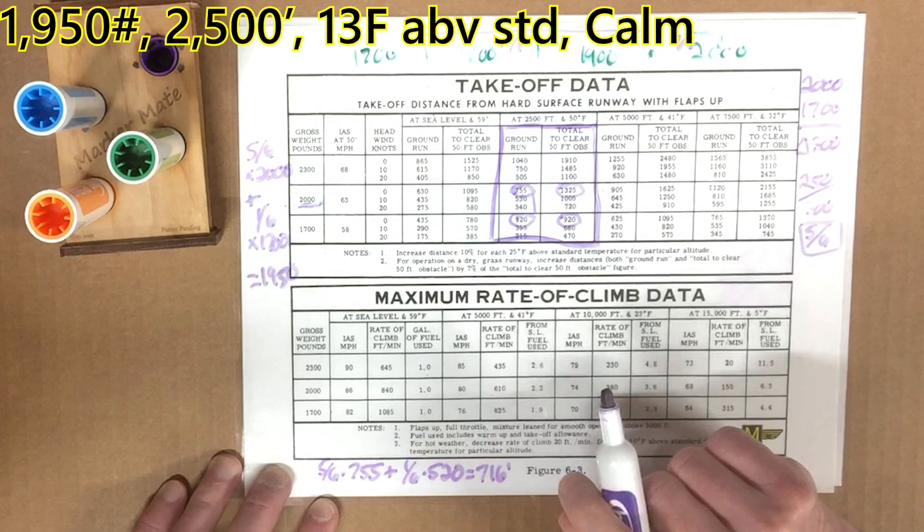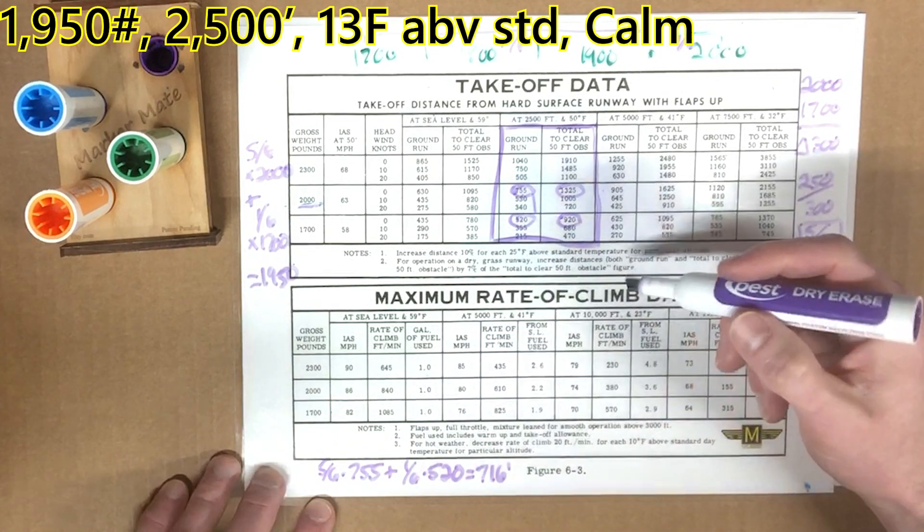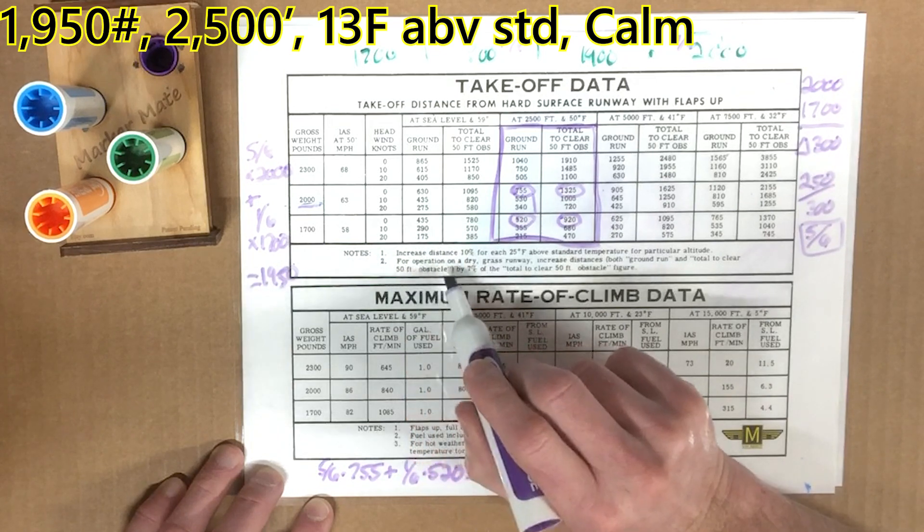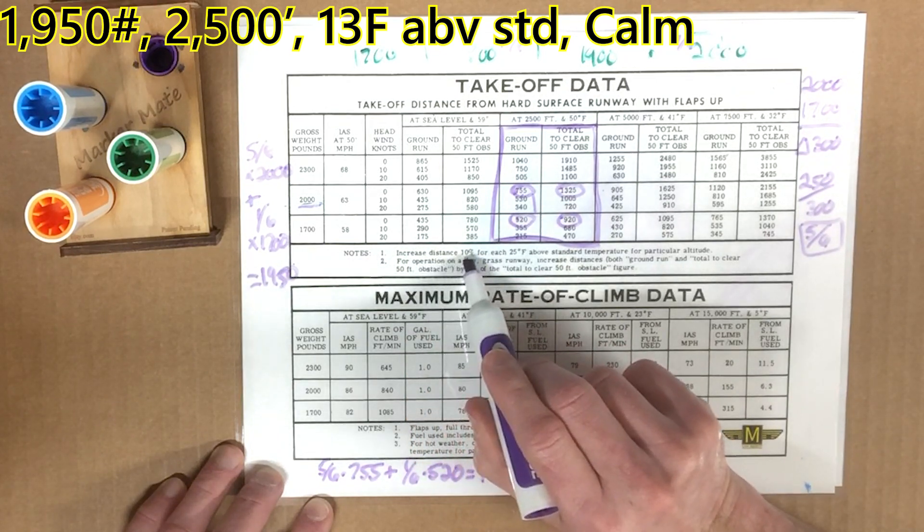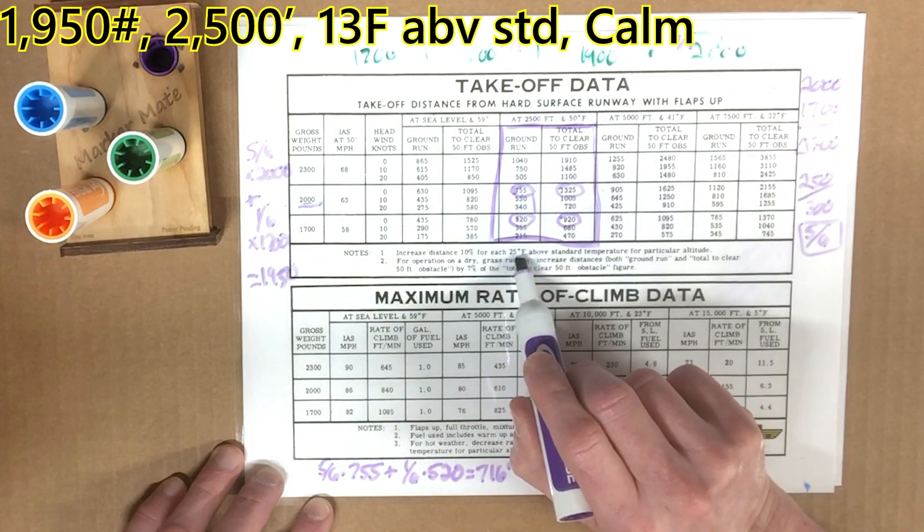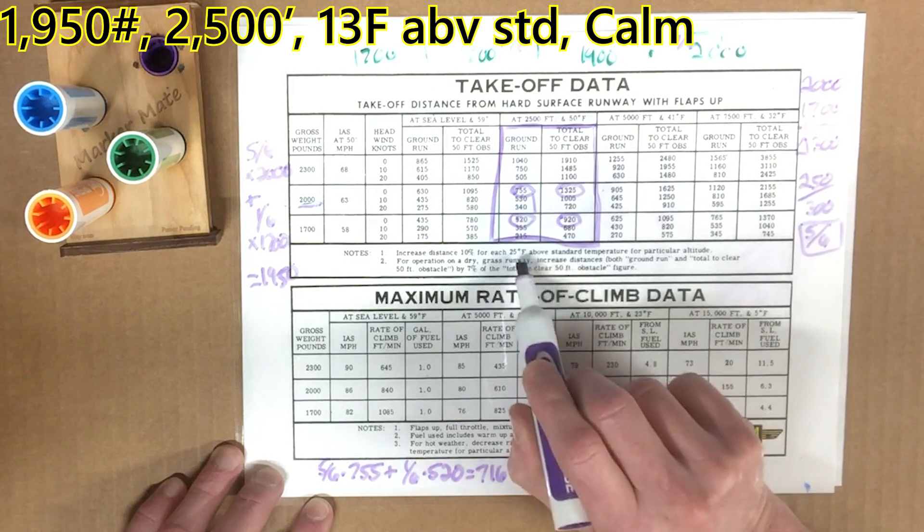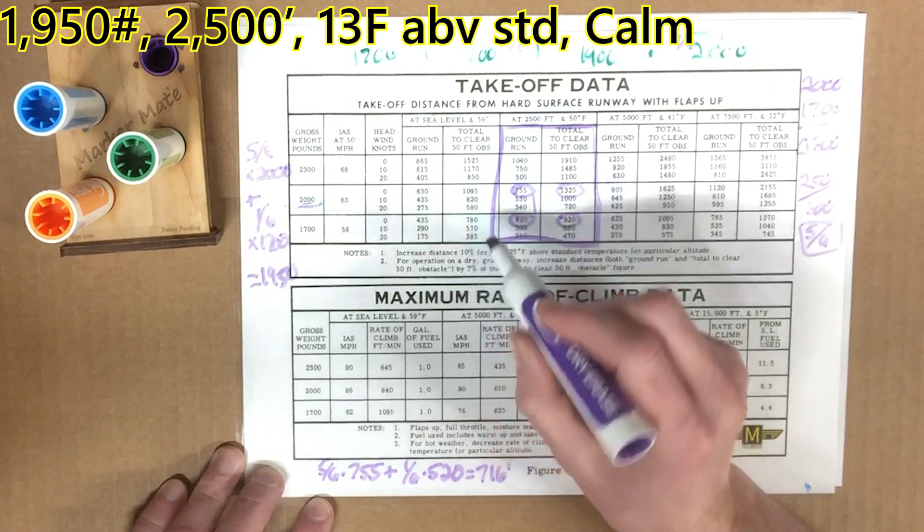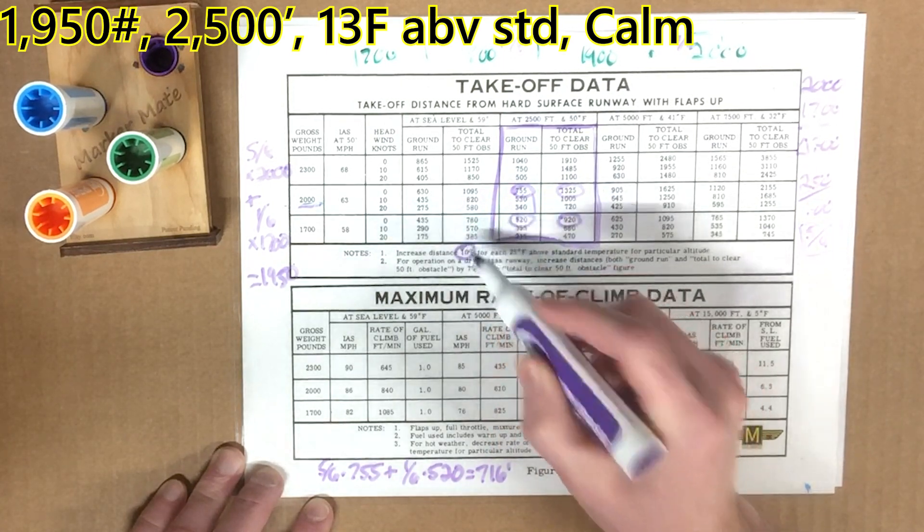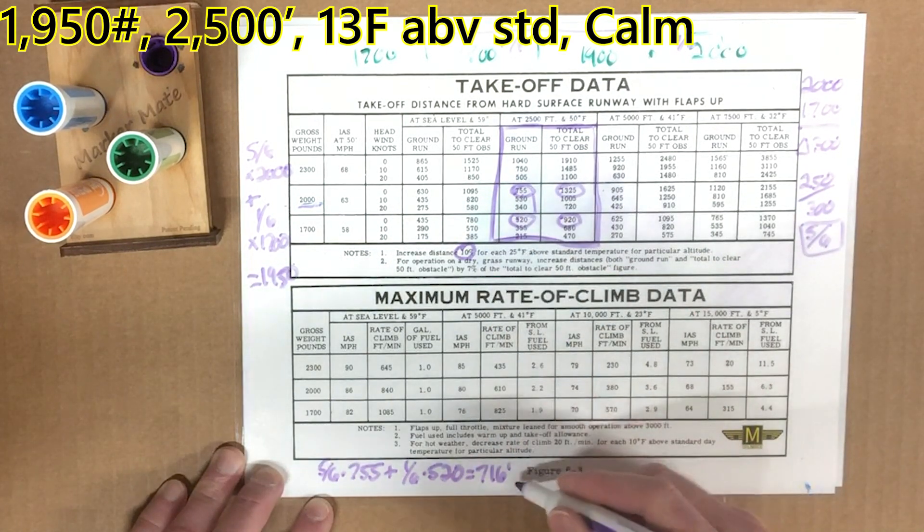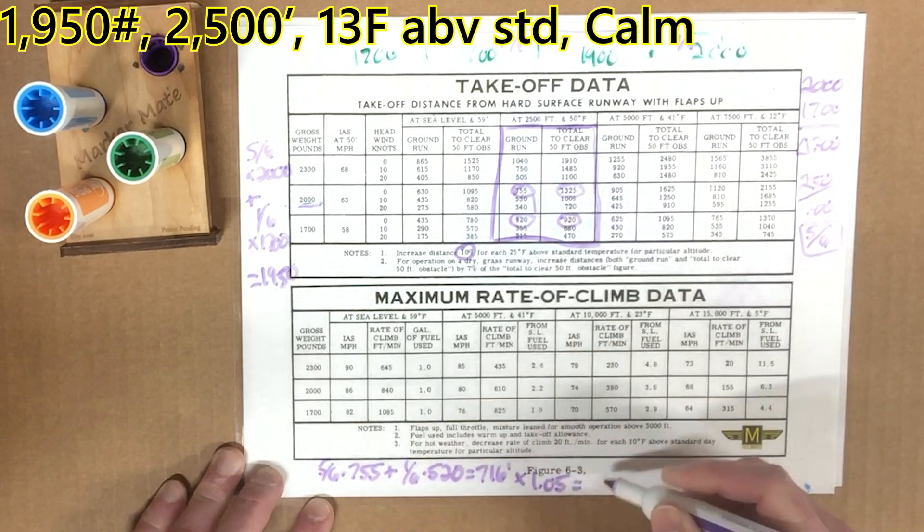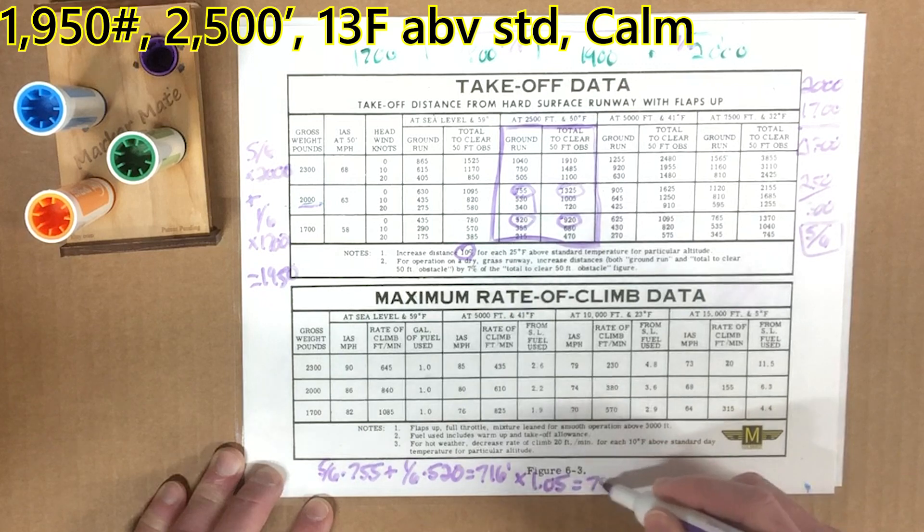However, we've got to read the footnotes. It says that it's 13 degrees hotter than standard. All right. Well, down here in the notes, it says that you're going to increase the distance 10% for each 25 degrees Fahrenheit above standard. Well, we're 13 degrees, which is basically half of 25. So we're going to only add half of this number. Instead of 10%, we're going to add 5%, right? So it's 716 times 1.05 for a total ground run of 752 feet.